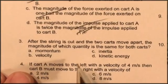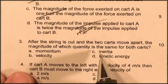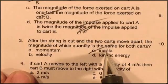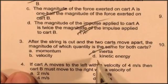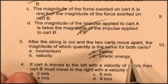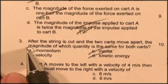Question three: after the string is cut and the two carts move apart, the magnitude of which quantity is the same for both of them? Well, they won't have the same inertia. Inertia essentially means mass, and so one's got twice the mass, twice the inertia. Kinetic energy is one half mv squared, different velocities, that's going to be different. Velocity, no, that's not true.